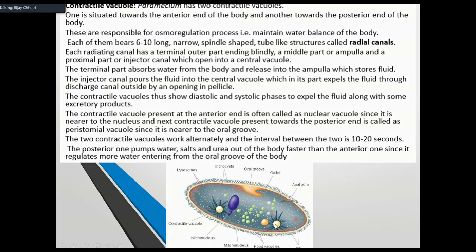The contractile vacuole's main function is osmoregulation — the balancing of ions and water in the body. This balance process is called osmoregulation. The contractile vacuoles are located anteriorly and posteriorly in the body.